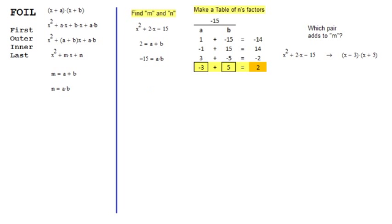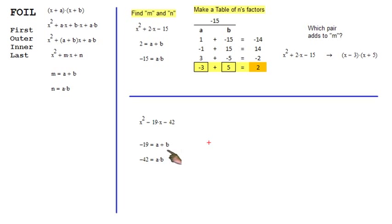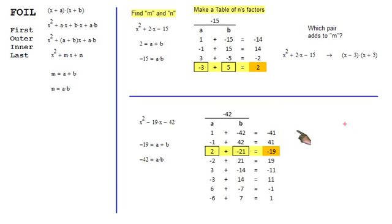Here's another example. X squared minus 19x minus 42. Negative 19 is a plus b. Negative 42 is a times b. Don't forget the negative on the 19 or the 42. You have to keep them there. So when you're making your table, 1 and negative 42, negative 1 and positive 42, you're looking for this negative 19. And here it is, the 2 plus the negative 21.